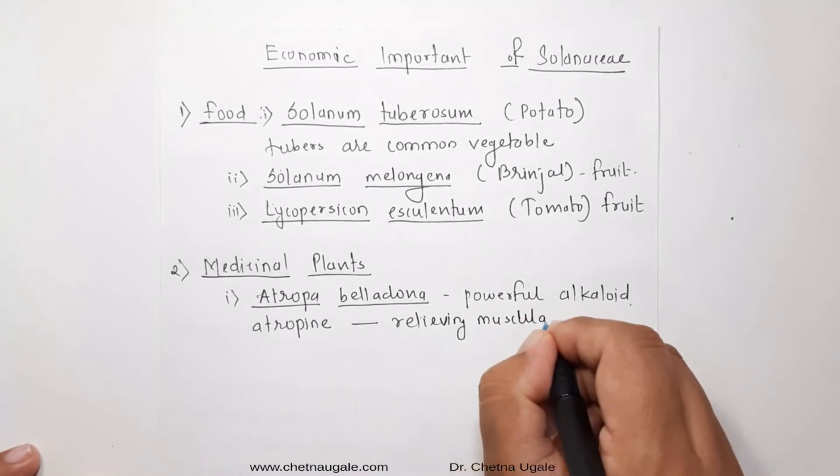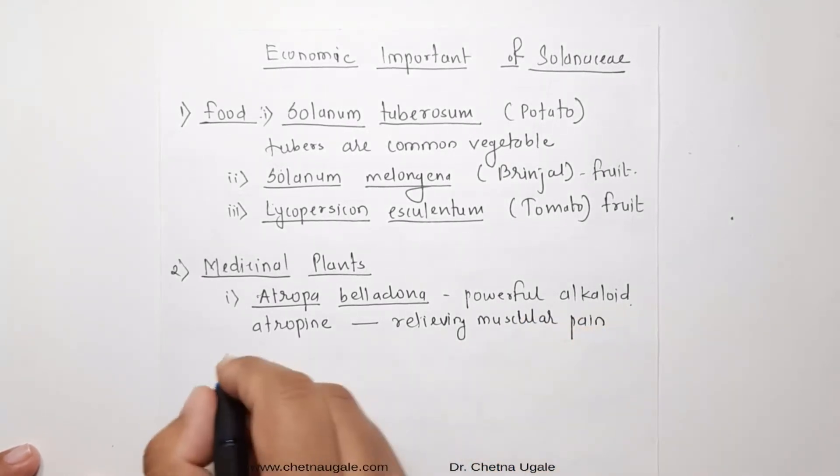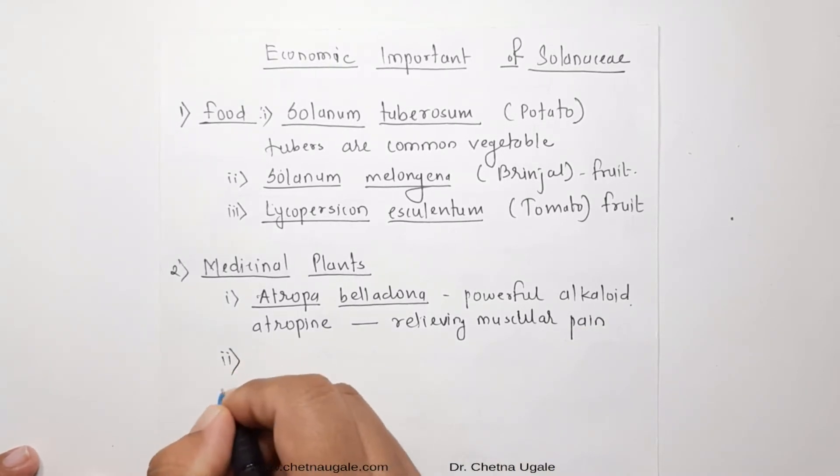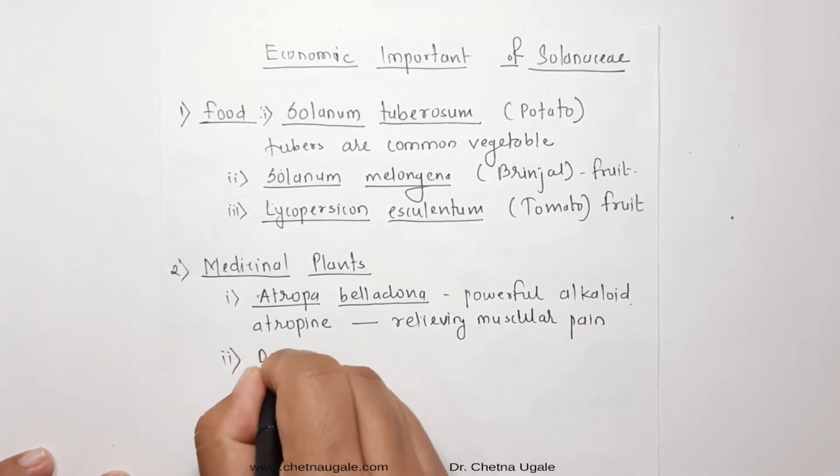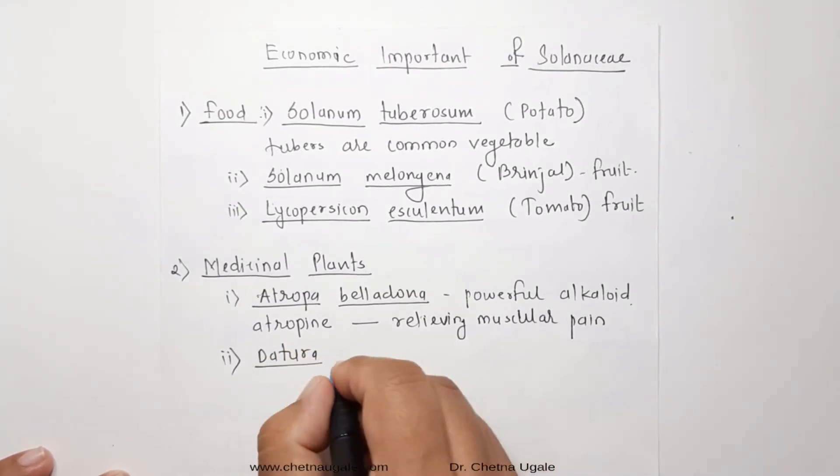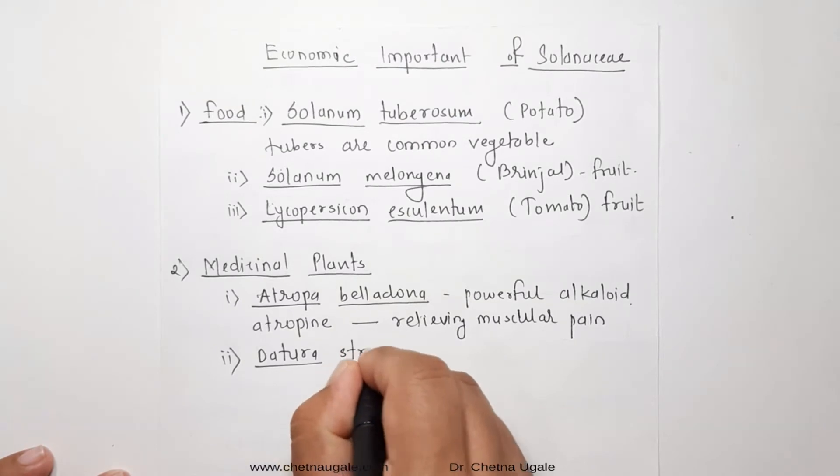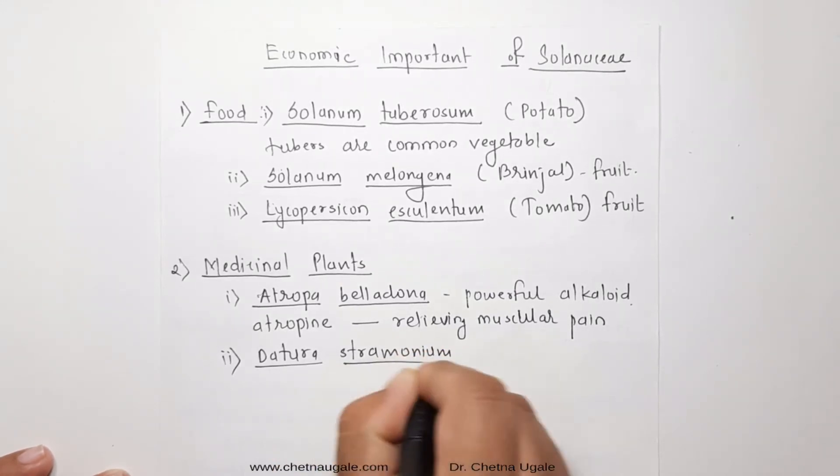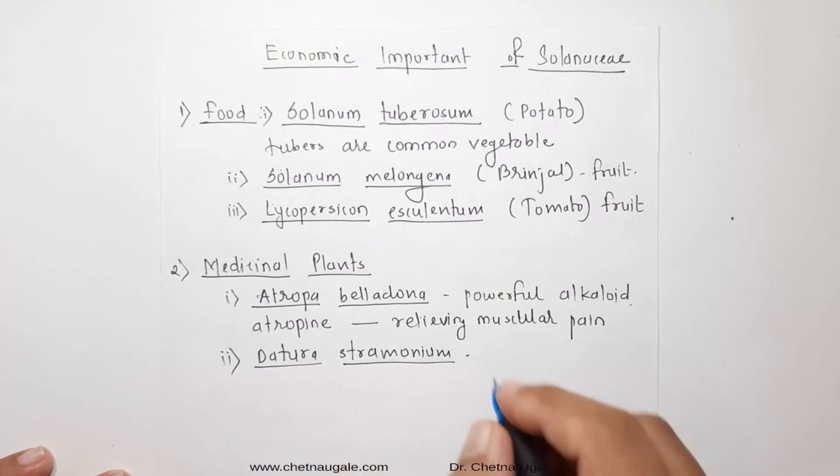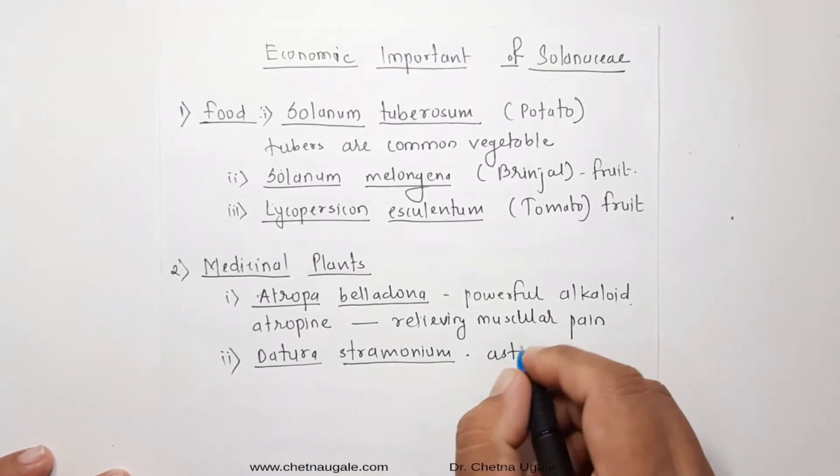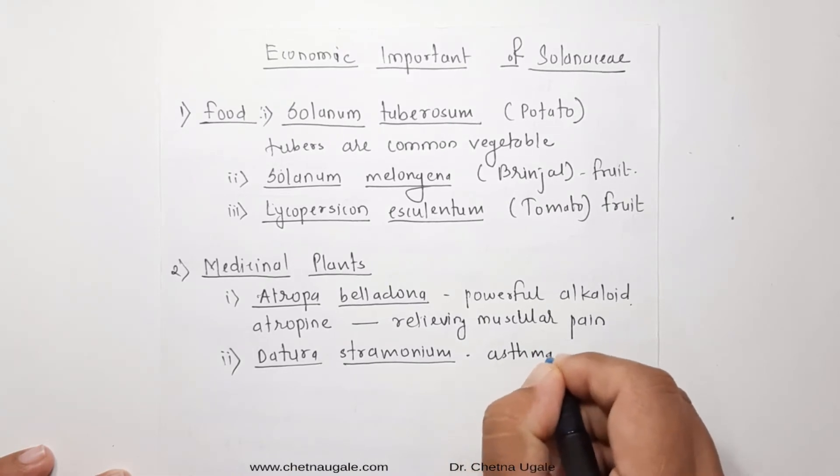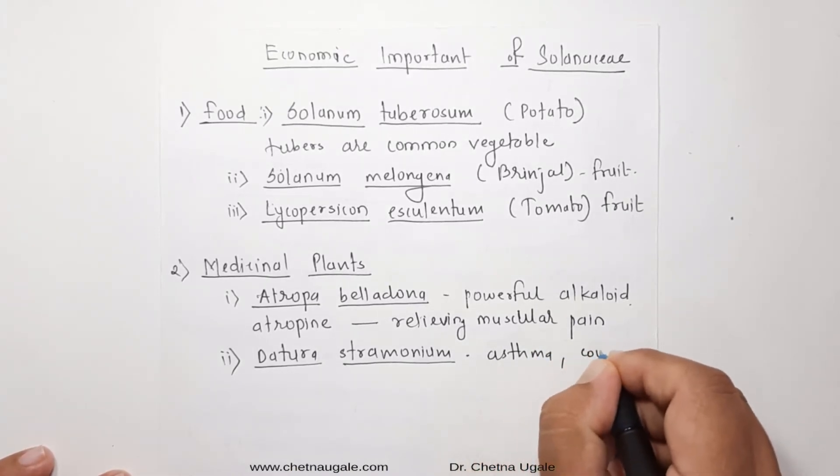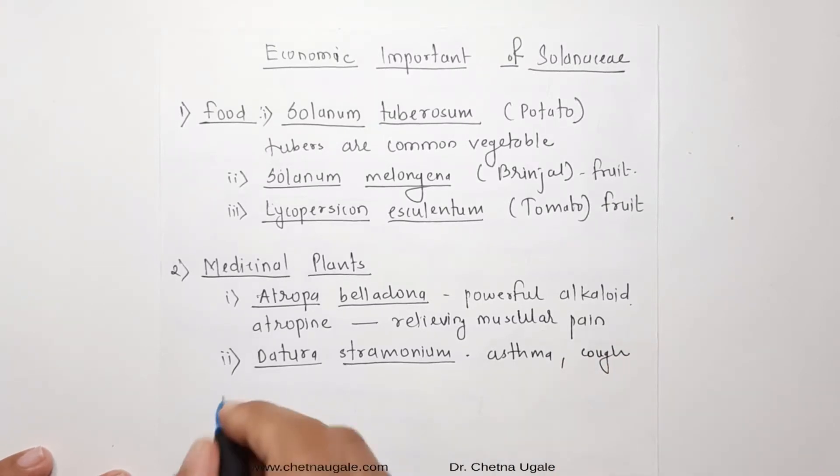The second plant of the Solanaceae family is Datura stramonium. There are two more species of Datura, which are Datura metel and Datura inoxia. Out of these three species, Datura stramonium is majorly used to cure asthma and whooping cough just because of the presence of secondary metabolites called stramonium.